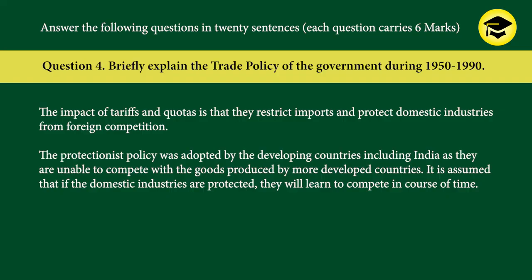Question 4: Briefly explain the trade policy of the government during 1950 to 1990. Answer: During the first seven five-year plans, trade was characterized by what is commonly called an inward-looking trade strategy, known as import substitution. This policy was aimed at replacing imports with domestic production — for example, instead of importing vehicles made in foreign countries, industries would be encouraged to produce them in India. By this policy, the government protected domestic industries from foreign competition. Protection from imports took two forms: tariffs and quotas. Tariffs are taxes on imported goods that make them more expensive and discourage their use. Quotas specify the number of goods which can be imported. The impact of tariffs and quotas is that they restrict imports and protect domestic industries from foreign competition.